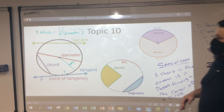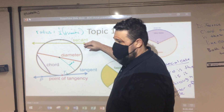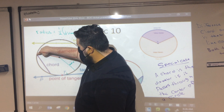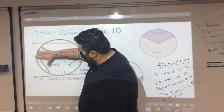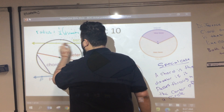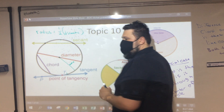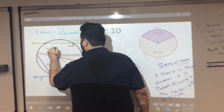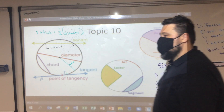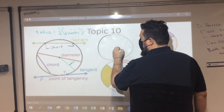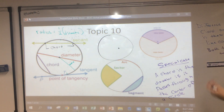The secant line is just a line that continues in both directions forever and passes through the circle at two different points. A chord touches and starts and stops on the circumference. So if you were to look at the secant line and find the length of a part, it would touch here and here — that segment is a chord — but since this continues forever, it's called a secant line. When you get to higher-level math, there's a lot more you'll do with this.